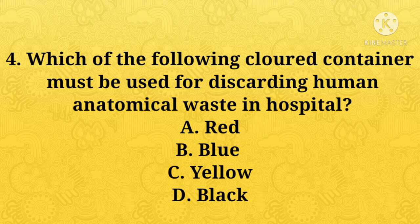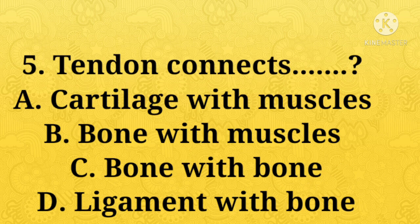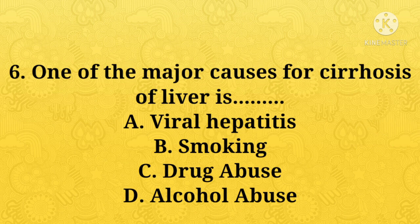Which of the following colored container must be used for discarding human anatomical waste in hospital? A: yellow, B: blue, C: yellow, D: black. Option C, yellow, is the right answer. A tendon connects — A: cartilage with muscle, B: bones with muscle, C: bone with bone, D: ligament with bone. Option B, bone with muscle, is the right answer.